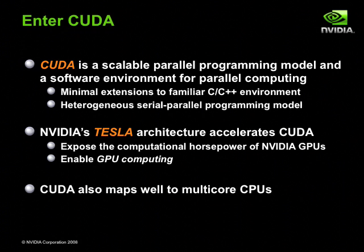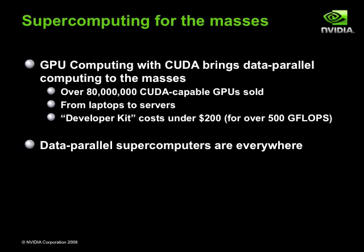These features of CUDA can result in significant application speed-ups with relatively little effort. NVIDIA's Tesla is the hardware that accelerates CUDA. While CUDA programs can run on all shipping NVIDIA GeForce and many Quadro products, the Tesla cards and rack-mountable servers are dedicated to exposing the computational horsepower of NVIDIA GPUs for GPU computing. While CUDA is designed for many-core architectures, it also maps well to multi-core CPUs. CUDA expresses parallelism well and has the ability to target either the GPU or CPU. Together, CUDA and GPUs represent the democratization of parallel computing by bringing data parallel computing to the masses.